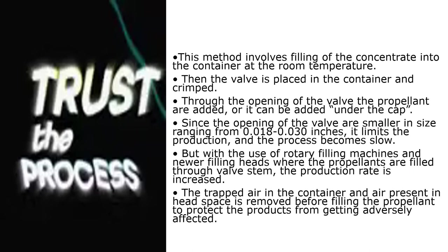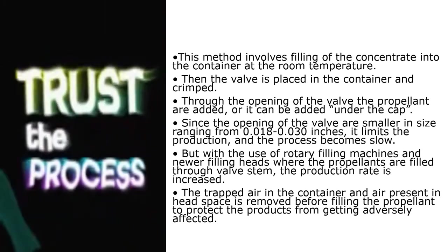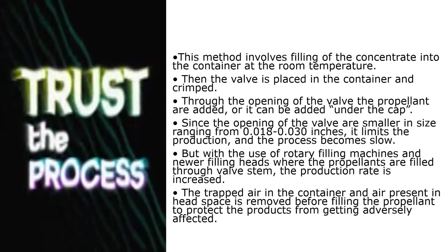The pressure filling process involves filling the concentrate into the container at room temperature. The valve is placed and crimped, and the propellant is added through the opening of the valve or under the cap. Since valve openings are small — 0.018 to 0.030 inches — the process is slow, but using rotary filling machines and newer filling heads where propellants are filled through the valve stem increases production rate. Trapped air in the container is removed before filling the propellant to protect the product.